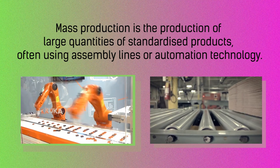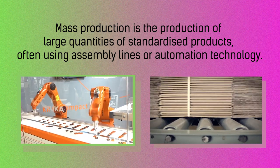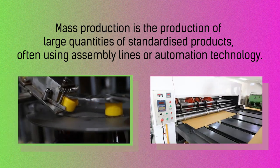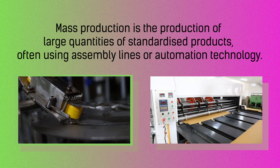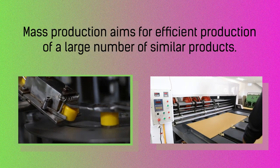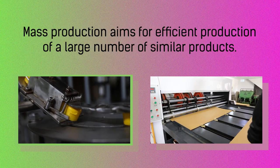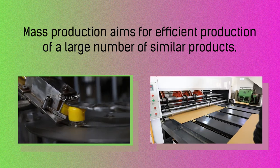Mass production is a production of large quantities of standardized products, often using assembly lines or automation technology. Mass production aims for efficient production of a large number of similar products.